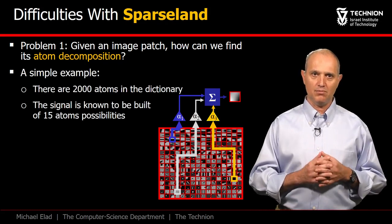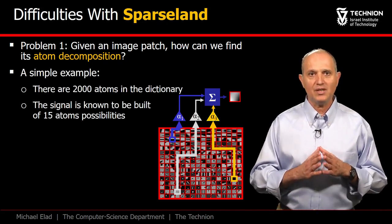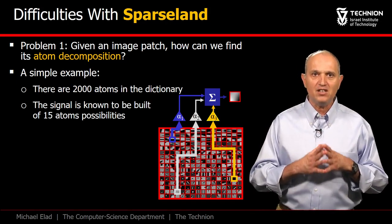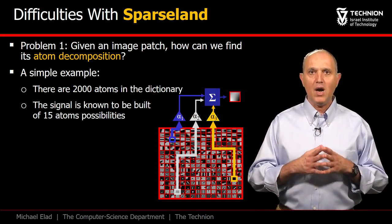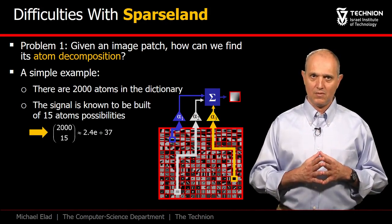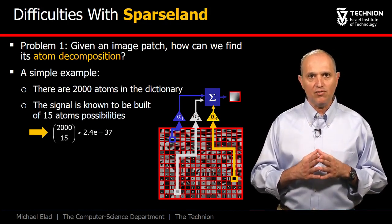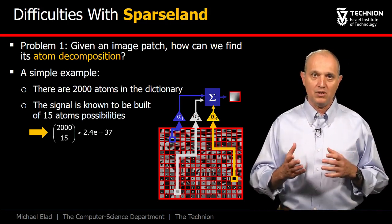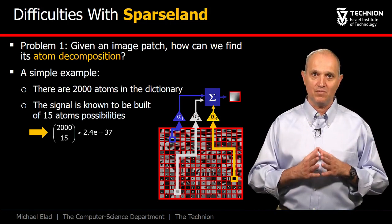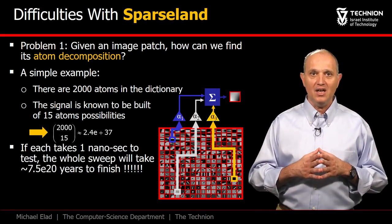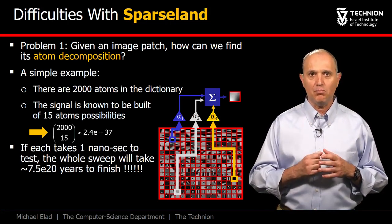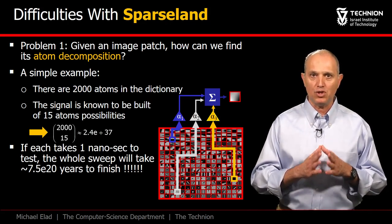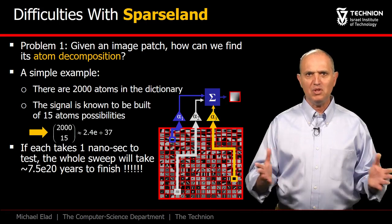Consider the following example, in which there are 2000 atoms to choose from, and assume that we know that only 15 of them are in fact used to create our signal. How can we find this set? We could explore exhaustively all the possibilities of choosing 15 out of the 2000, but this number of options turns out to be huge. If indeed we try, investing one nanosecond for each of these options, we will need billions of years to conclude our computational process. So what can we do?